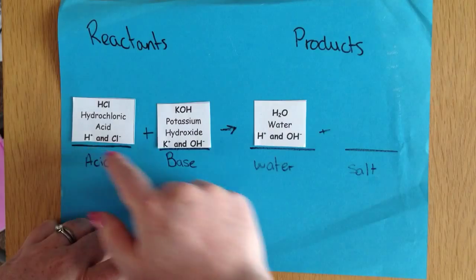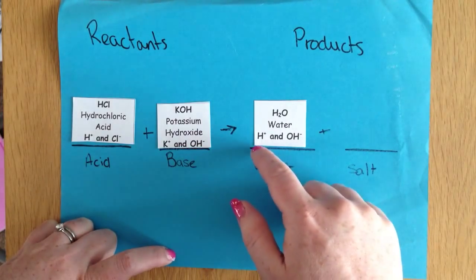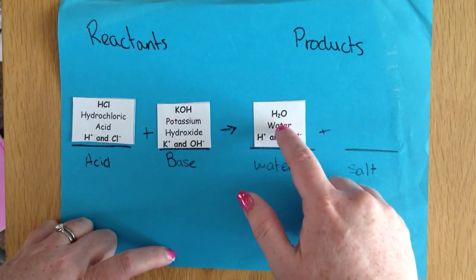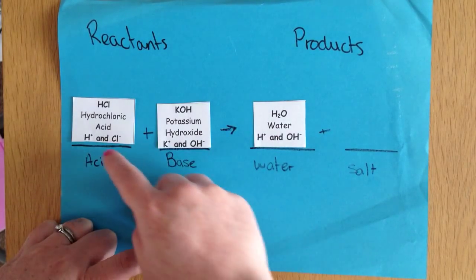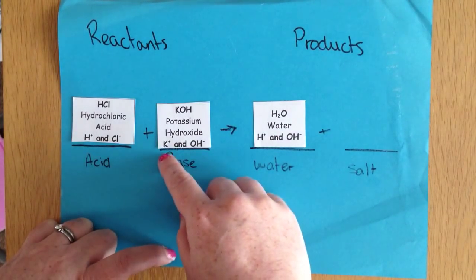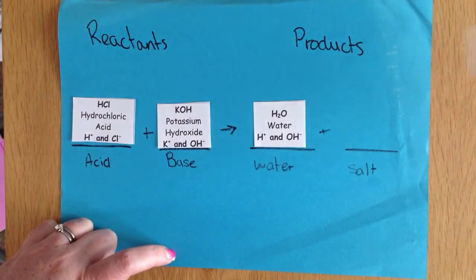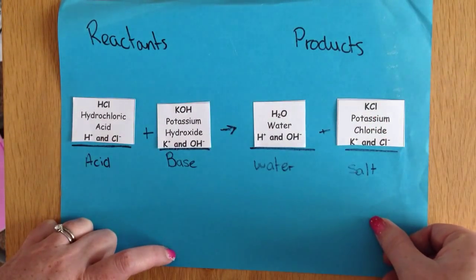So we can take those two ions, put them together, the hydrogen ion from here and the hydroxide ion from here and we have H and OH and that makes water. So now we can look at the two things that we have left over. We have chlorine ion here and we have potassium ion here.